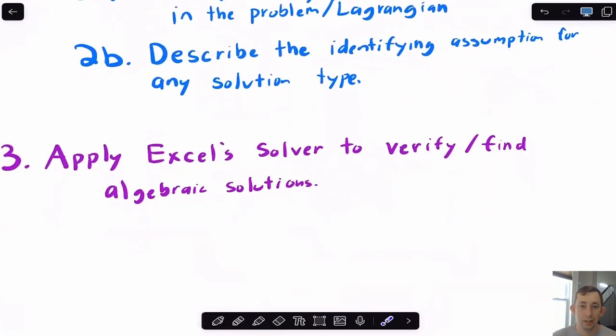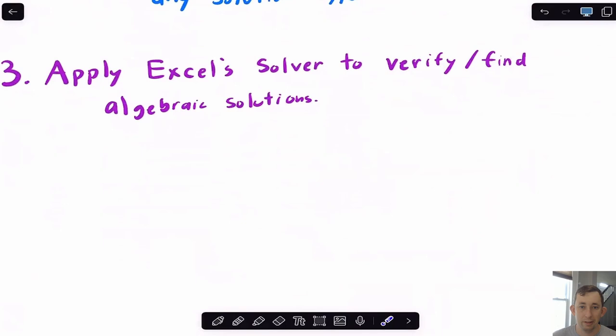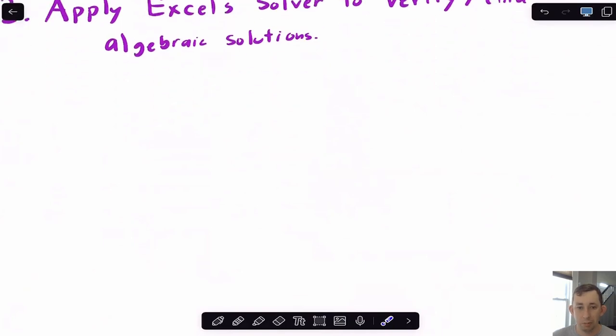Now, the other thing we're going to do is a lot of this math is more complicated than really you're going to need to explicitly solve for in an undergrad environmental or natural resource or other type of applied micro class. So what we're going to do is we're going to use Solver. So I'm going to teach you guys how to use Solver and how to use Solver to verify or find the analytical solutions to these constrained optimization problems.